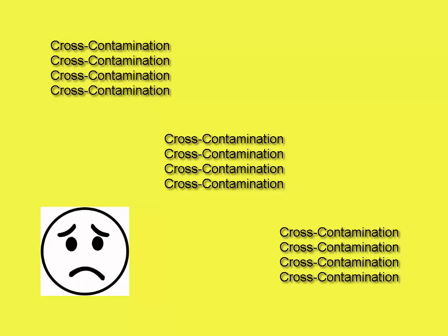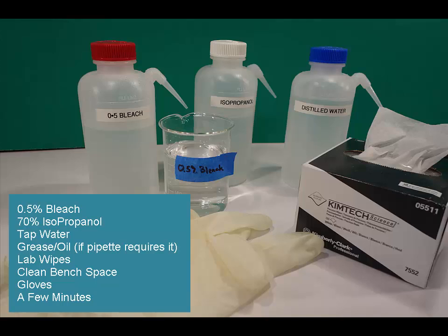Here's what to do when you get liquid inside the pipette barrel. You'll need 0.5% bleach, 70% isopropanol, tap water, grease or oil if your pipette requires it, and lab wipes.